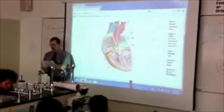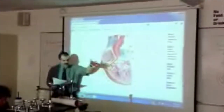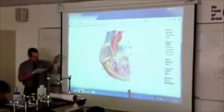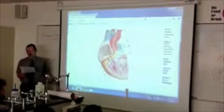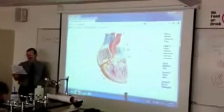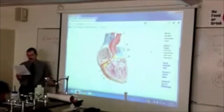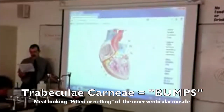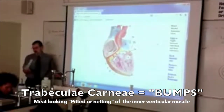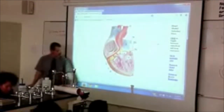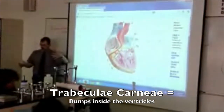Those papillary muscles are the anchor that holds the string. In the ventricles, all that folded, bumpy-looking myocardium has a name. What do you call the netted meat of the ventricle? Trabeculae carnae. Trabeculae means netted, carnae means meat — literally, netted meat in Latin. So the bumps in your ventricle, all of them, are trabeculae carnae.